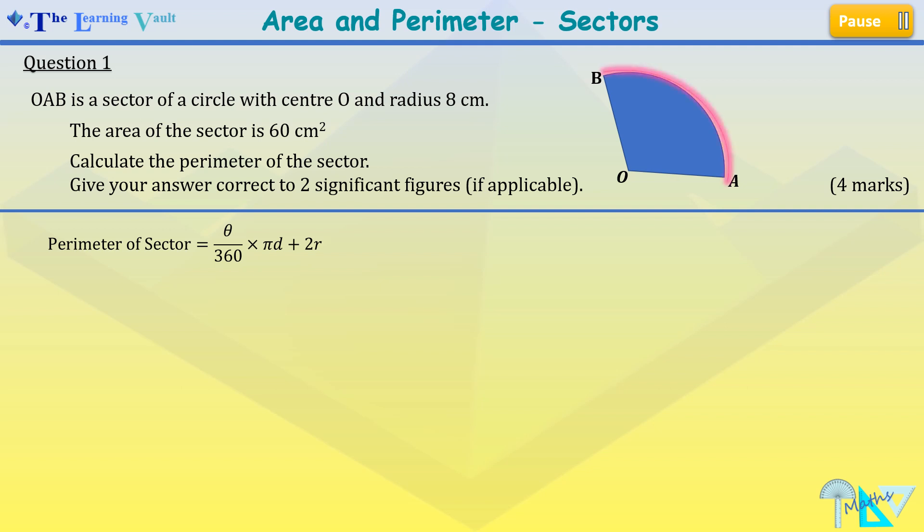Now the length of our arc AB is theta over 360 times pi d, and we have the radius OA and OB which will give us our 2r there.